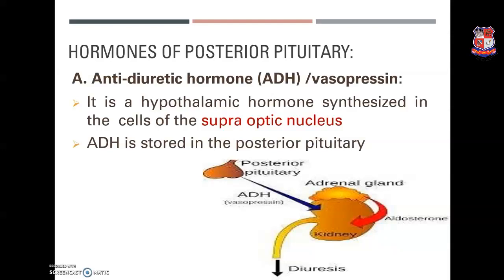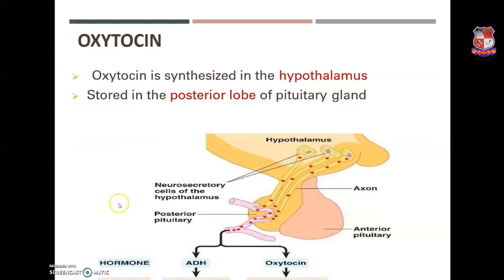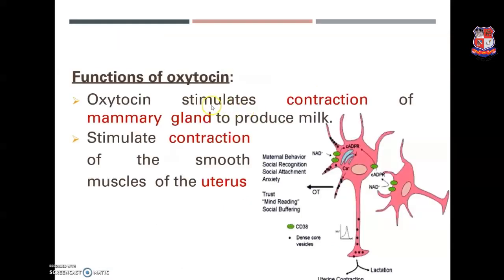The posterior pituitary consists of antidiuretic hormone (ADH), also known as vasopressin — a hypothalamic hormone synthesized in the cells of the supraoptic nucleus and stored in the posterior pituitary. Its two functions are retaining water in the body and constricting blood vessels. Oxytocin is synthesized in the hypothalamus and stored in the posterior lobe of the pituitary gland; its function is stimulation of contraction of mammary glands to produce milk and stimulation of smooth muscle contractions of the uterus.